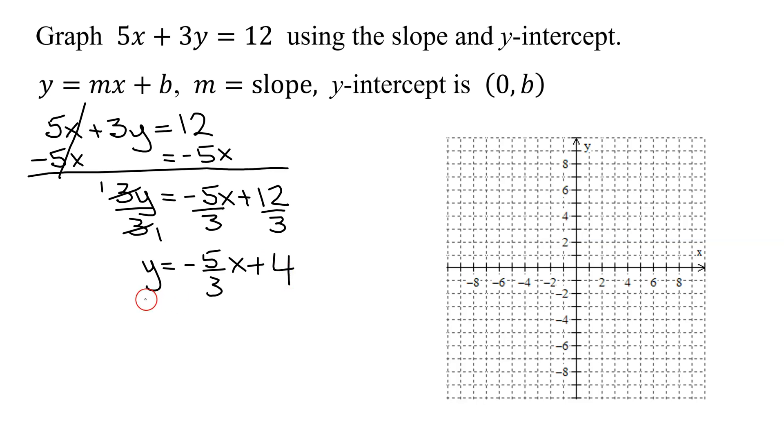So now my equation is in slope-intercept form. So m, the slope, is the coefficient of the x term. In this case, m is negative 5 thirds.